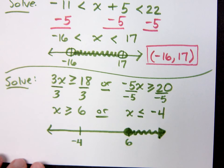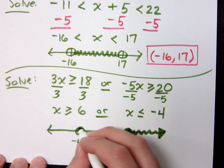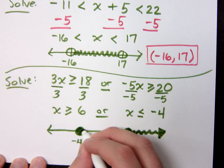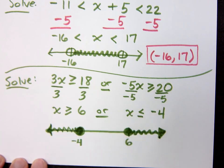X is less than or equal to negative 4. What kind of circle? Closed. Closed. Thanks for the yawn, sorry. And going out to the left. Do you all agree?